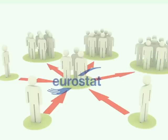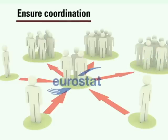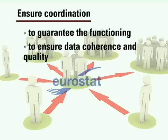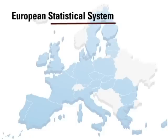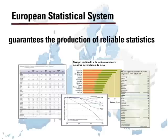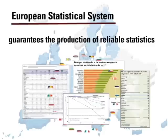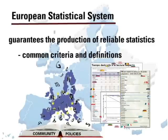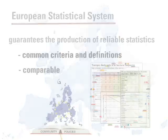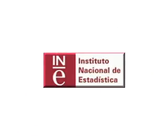Furthermore, Eurostat undertakes to ensure necessary coordination in order to guarantee the functioning of the system and to ensure data coherence and quality. In this way, the European Statistical System guarantees the production of reliable statistics compiled in all member states in accordance with common criteria and definitions, and the processing of data in a suitable manner, so that they are always comparable between the different countries of the European Union.